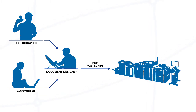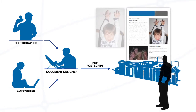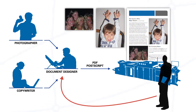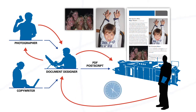But at this point in the workflow, the print operator or customer may notice a few problems with some of the images when printing a sample. When this happens, the operator must go back to the designer, who may need to go back to the photographer to get the images edited, get the PDF updated, and submit the job to the printer again. Or the operator may know how to extract photos from a PDF into an editing tool such as Photoshop to make the image corrections.